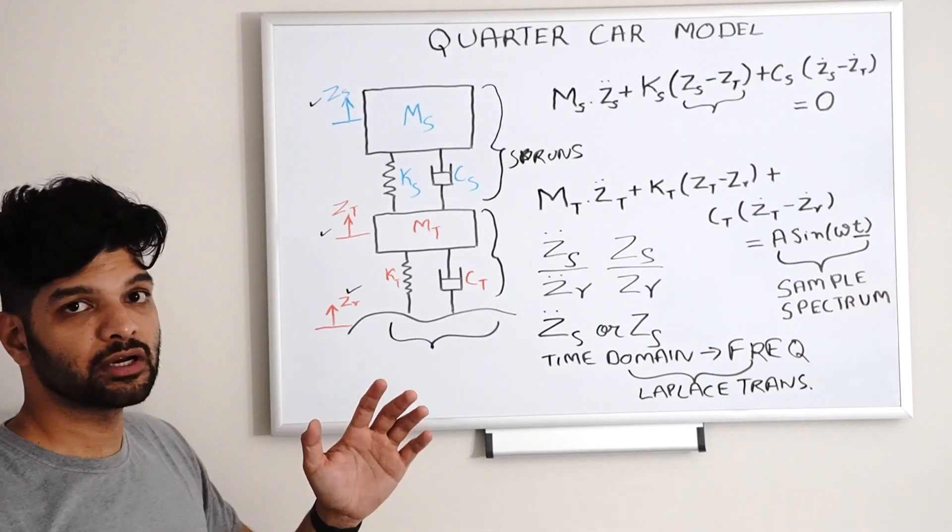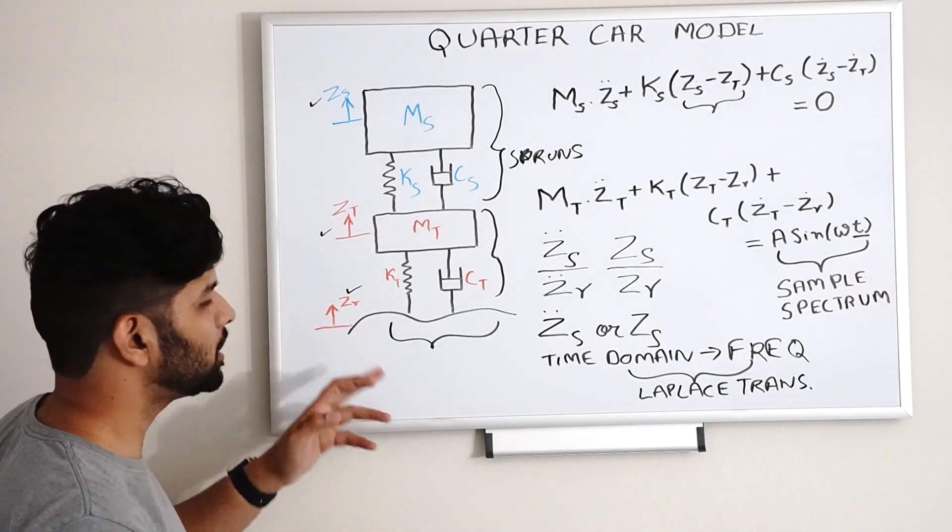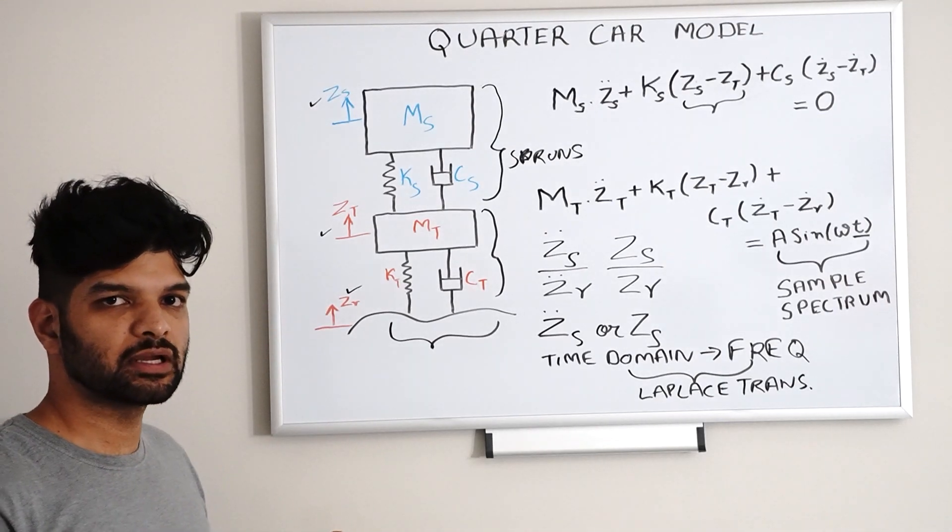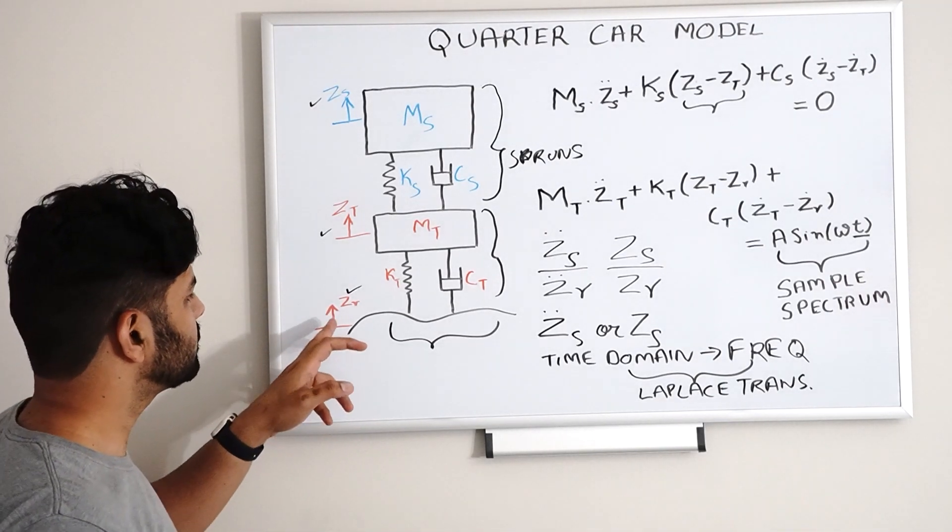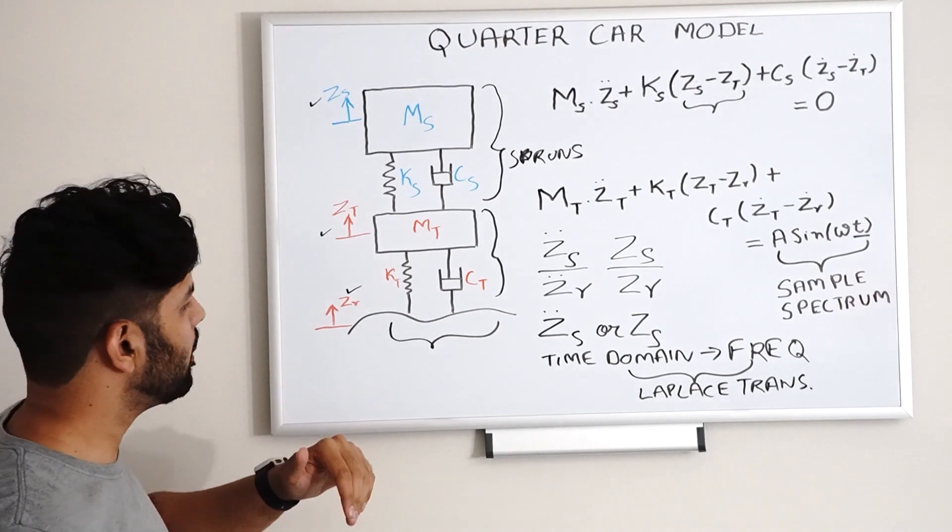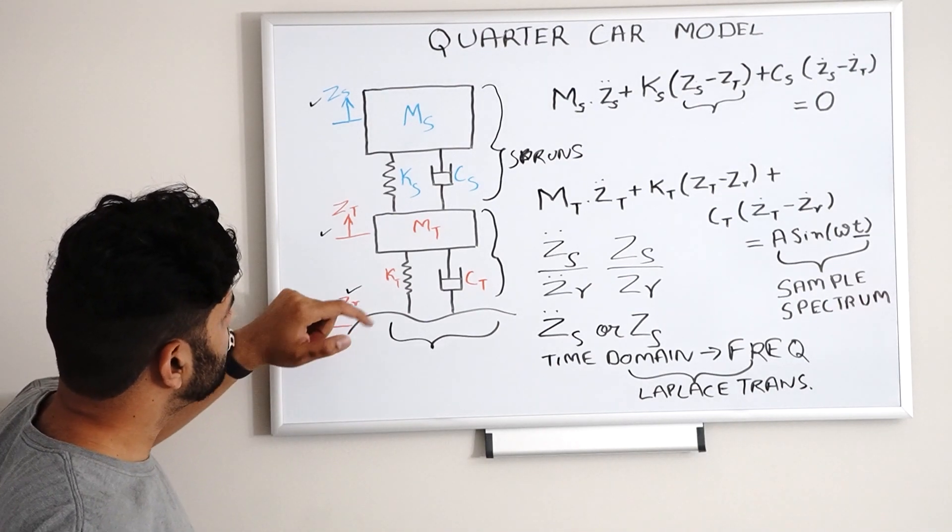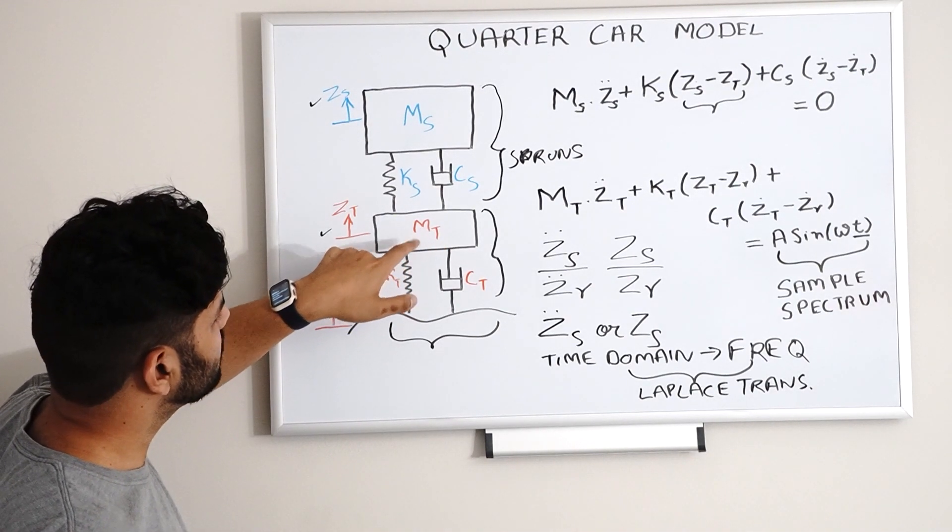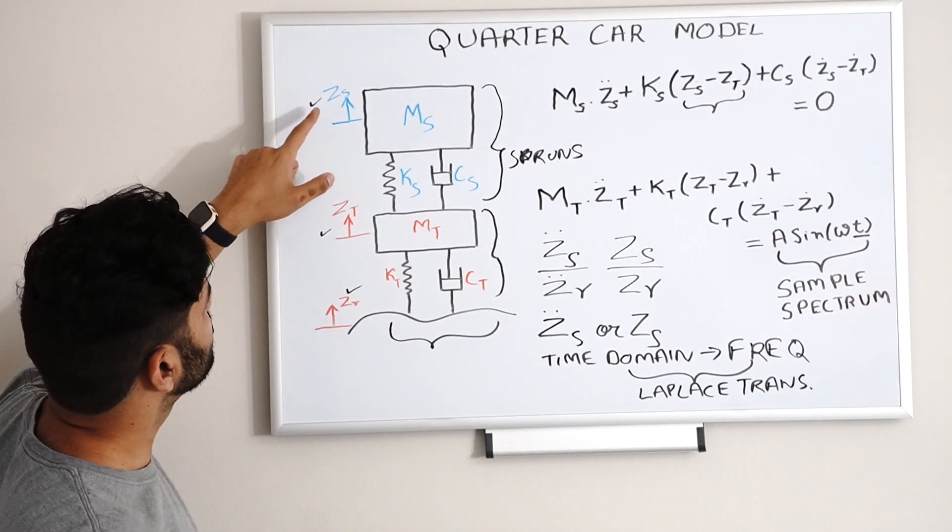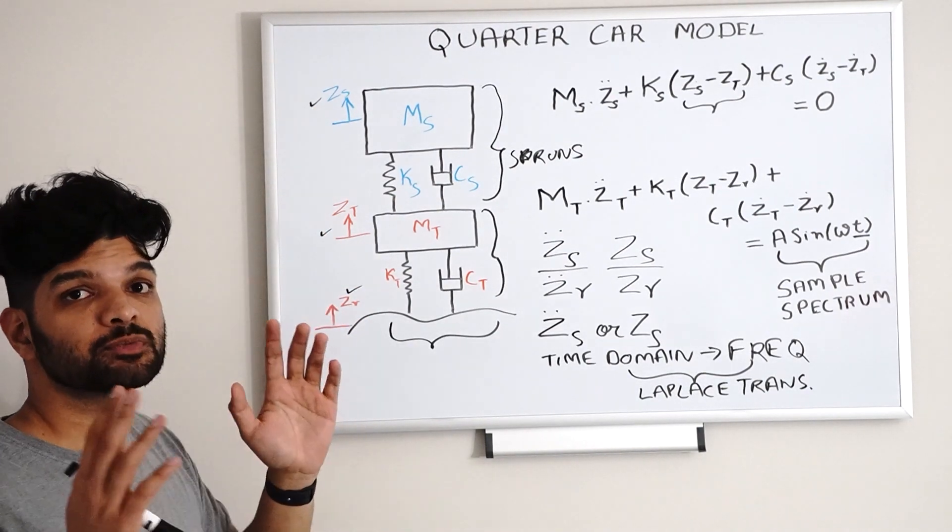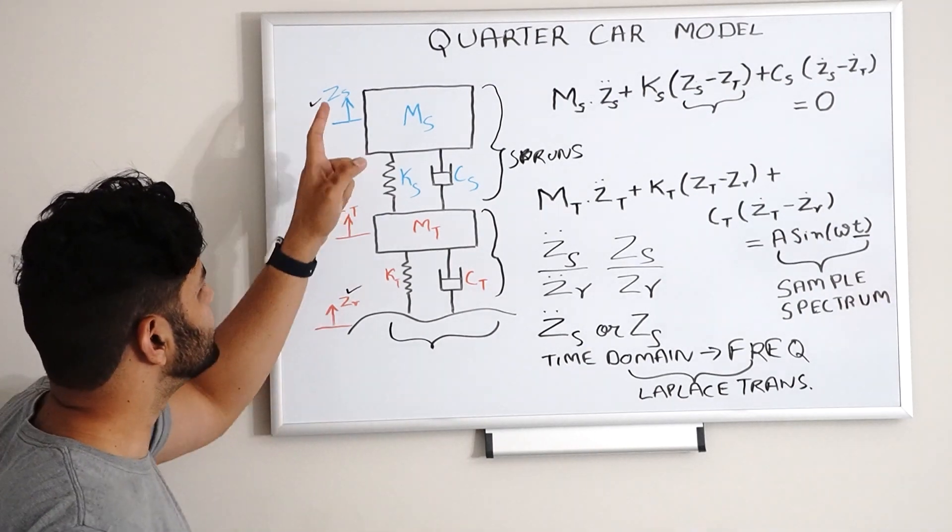And then we have our road profile over here, which is given by ZR. So what happens over here is, in our analysis, we have ZR, which is the vertical deflection which can be in either direction. For simplicity, let's consider it's going up. So you have ZR, the vertical deflection on the mass of the tire is ZT, and the vertical deflection on the sprung mass of that model is ZS.